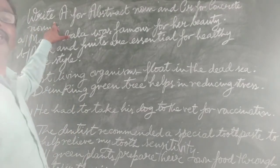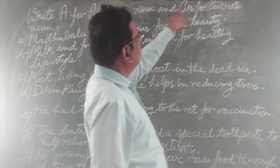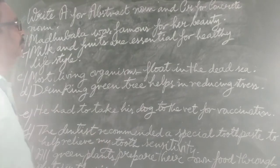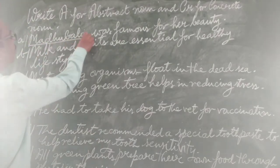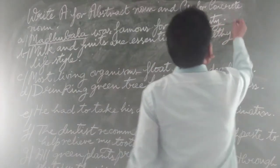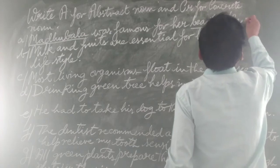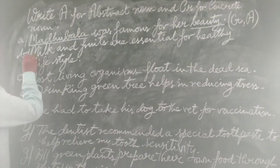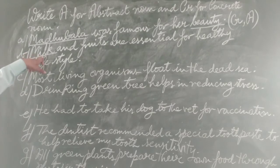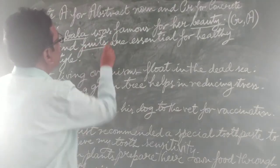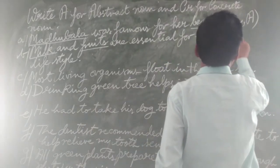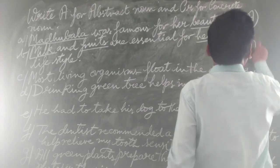Now students, look at this exercise: write A for abstract noun and CR for concrete noun. Look at the first sentence A: 'Madhubala was famous for her beauty.' Here, Madhubala is a concrete noun, and beauty is an abstract noun. So CR for concrete and A for abstract. Now come to B: 'Milk and fruits are essential for a healthy lifestyle.' Milk is a concrete noun — you can also say material noun — and fruits are also concrete nouns. And healthy lifestyle refers to something abstract.